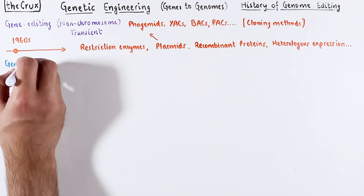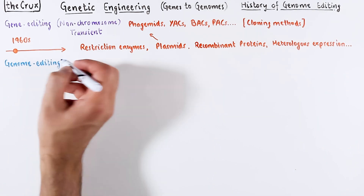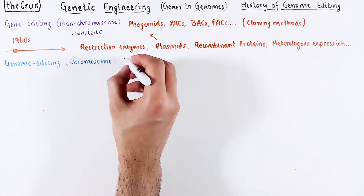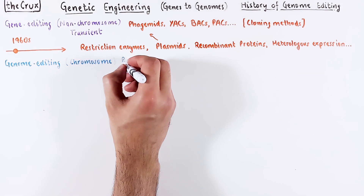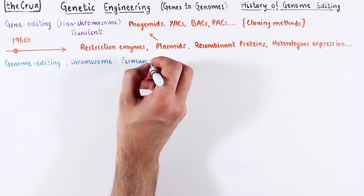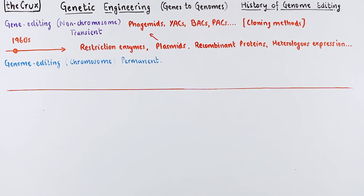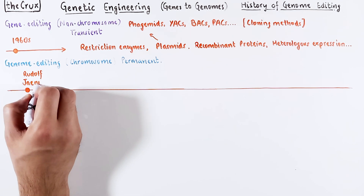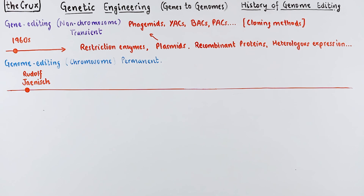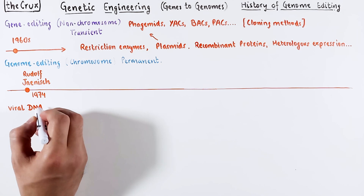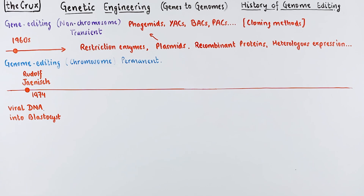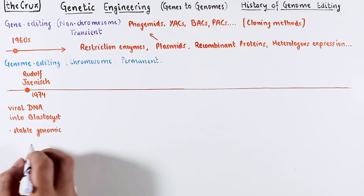To our realization, the timeline of gene editing has influenced the development of genome editing methods, where chromosomes are manipulated to achieve a permanent expression of a gene. One example of the genome editing timeline begins with Rudolf Jaenisch in 1974, who injected SV40 virus DNA into the mouse blastocyst, and part of that viral DNA was found to be integrated into the mouse genome.